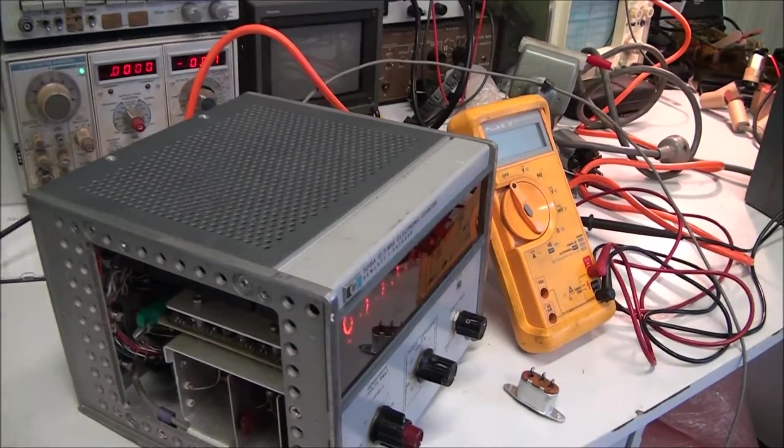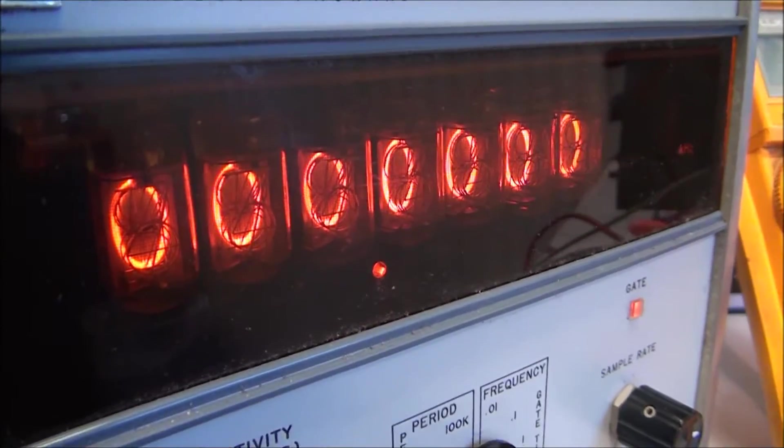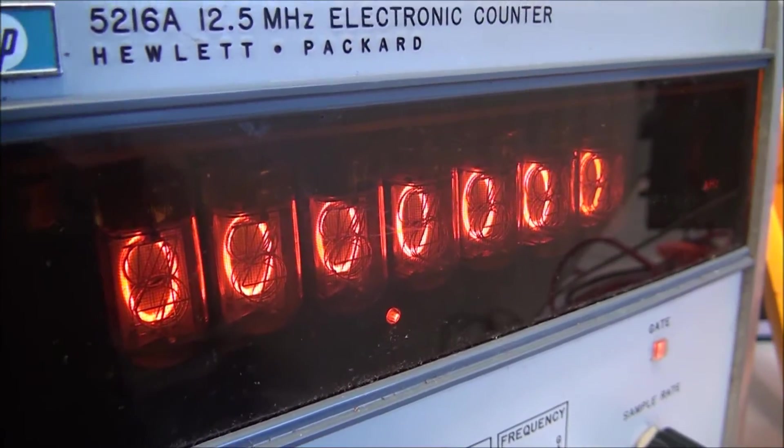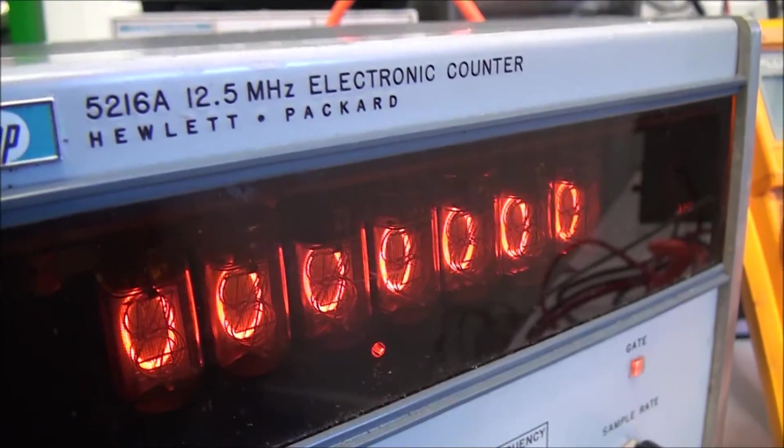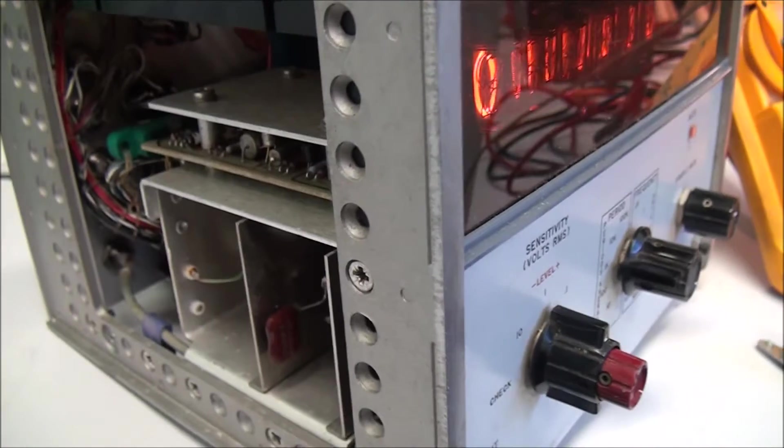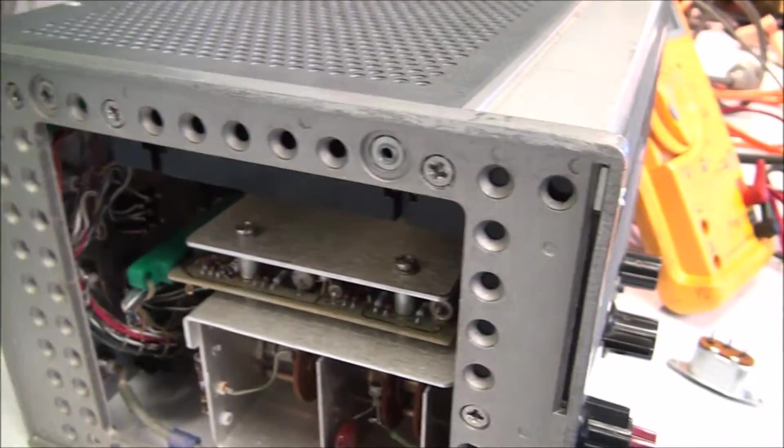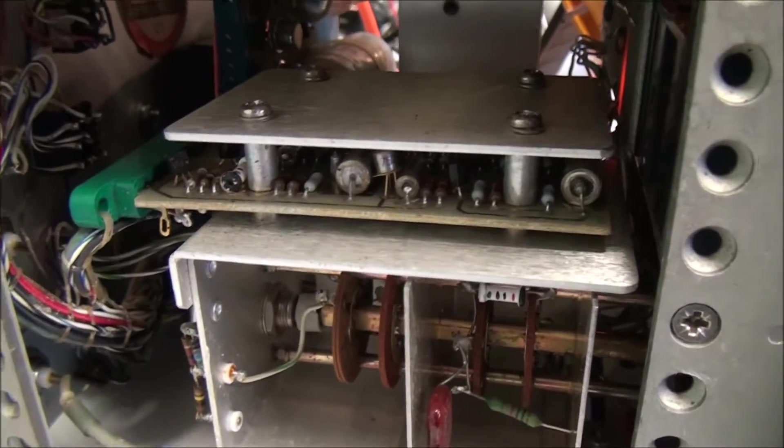This one here is a Hewlett Packard frequency counter. It uses Nixie tubes for the readout, 12.5 megahertz. Unfortunately the covers on this instrument were missing when I got it, so I have to see if I can make something up.